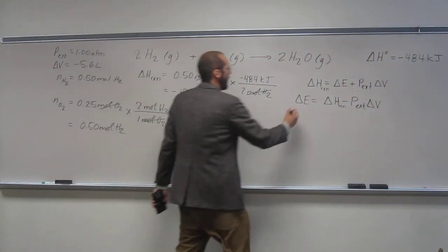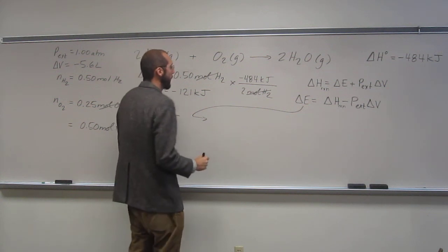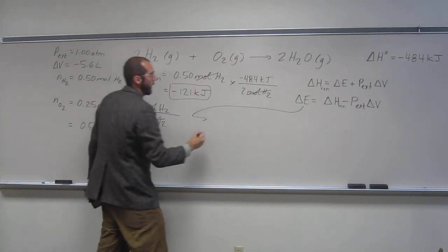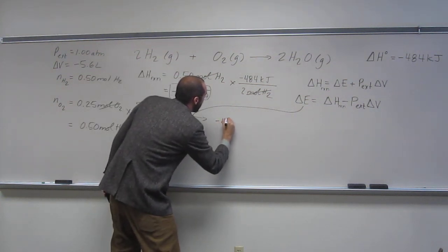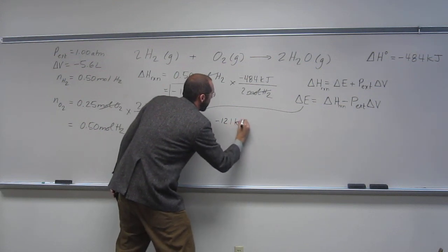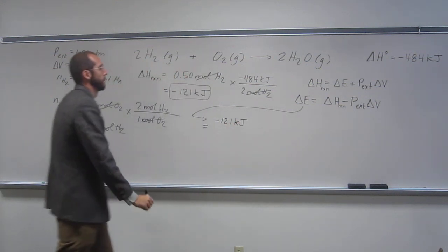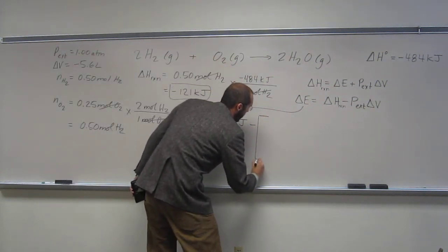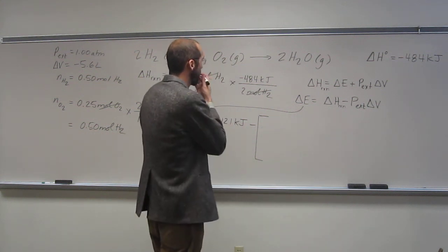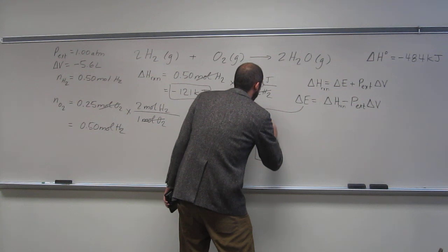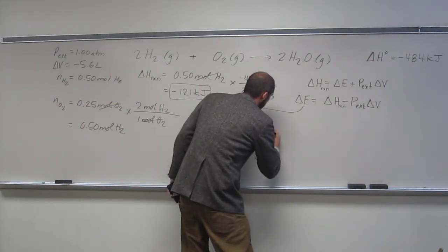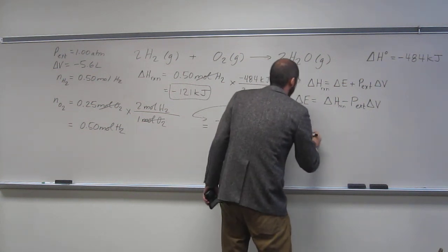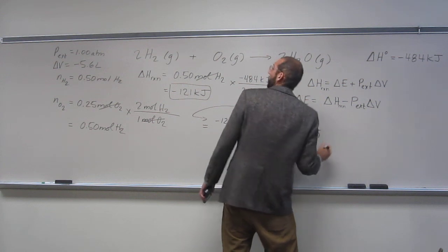Let's put it over here so we've got some more room. So delta H of the reaction, where is that? It's here, right? Negative 121. So what have we got? Negative 121 kilojoules minus, so this is the way I like to do these ones. Big bracket like that. The P external, which is 1.0 ATM times delta V negative 5.6 liters.